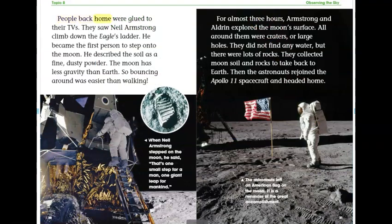People back home were glued to their TVs. They saw Neil Armstrong climb down the Eagle's ladder. He became the first person to step onto the moon. He described the soil as a fine dusty powder. The moon has less gravity than Earth, so bouncing around was easier than walking. When Neil Armstrong stepped on the moon, he said, 'That's one small step for a man, one giant leap for mankind.'